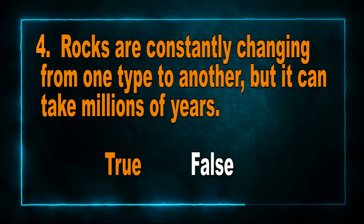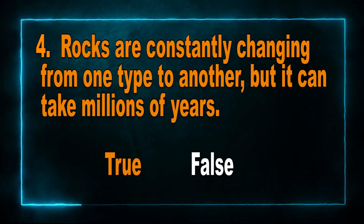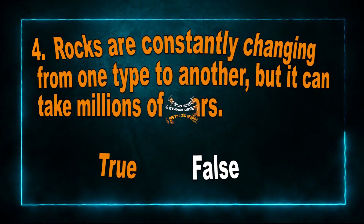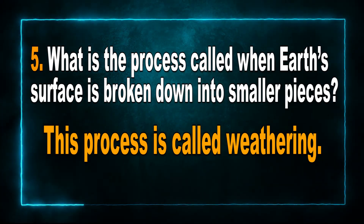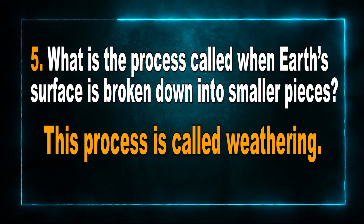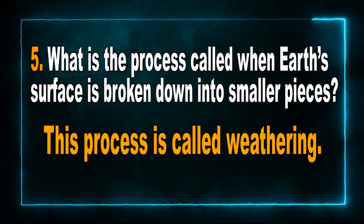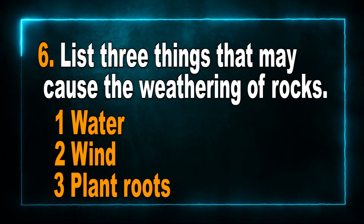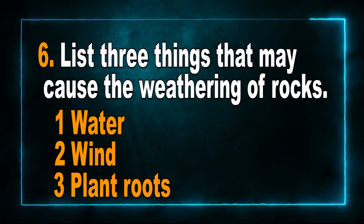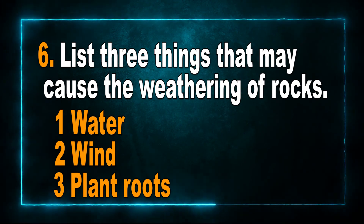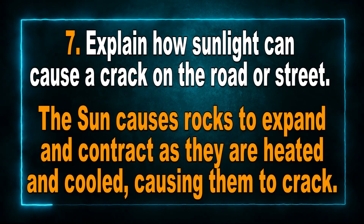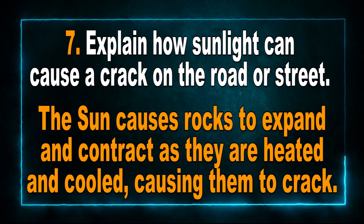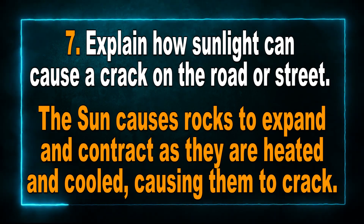Question 4 was True or False: Rocks are constantly changing from one type to another, but it can take millions of years. This is true. Question 5: What is the process called when the earth's surface is broken down into smaller pieces? This process is called weathering. Question 6: List three things that may cause the weathering of rocks. The answers are water, wind, and plant roots, which can be classified as a living thing. Question 7: Explain how sunlight can cause a crack on the road. The answer is that the sun causes rocks to expand and contract as they are heated and cooled, causing them to break away.